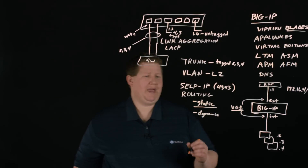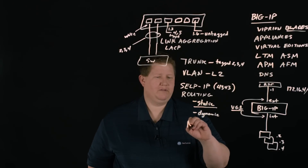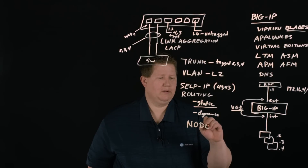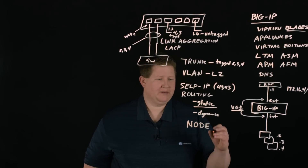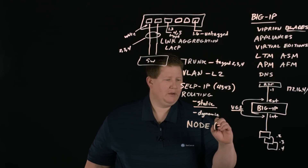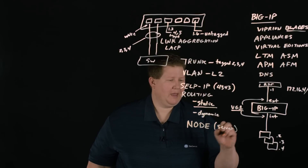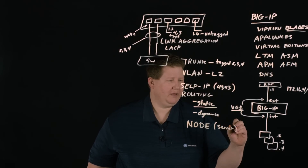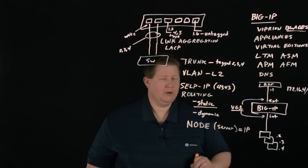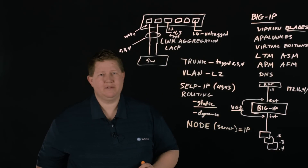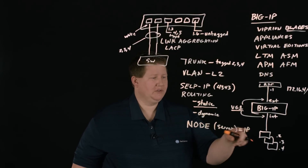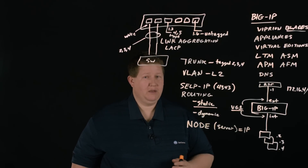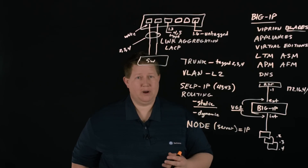The next construct is a node. A node you'd consider like a host — like a server. The Big IP stores nodes, and a node is just an IP address — it could be IPv4 or IPv6, but it's just an IP.